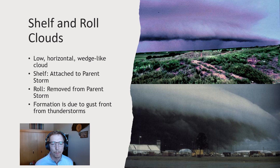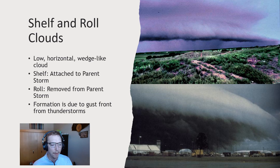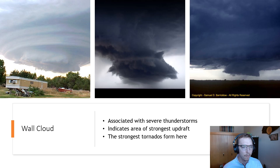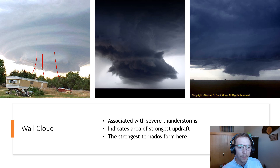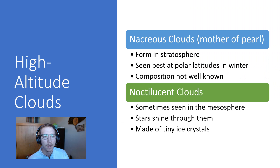Shelf and roll clouds are pretty famous — you see these with major storms. These are low, horizontal, wedge-like clouds: the shelf is attached to a parent storm, the roll is removed from a parent storm, both forming due to gust fronts from the thunderstorm. Wall clouds are associated with incredibly severe thunderstorms and indicate areas of very strong updrafts, with lots of air rushing up and condensing moisture. We also see the strongest tornadoes being formed from systems with a wall cloud developed.